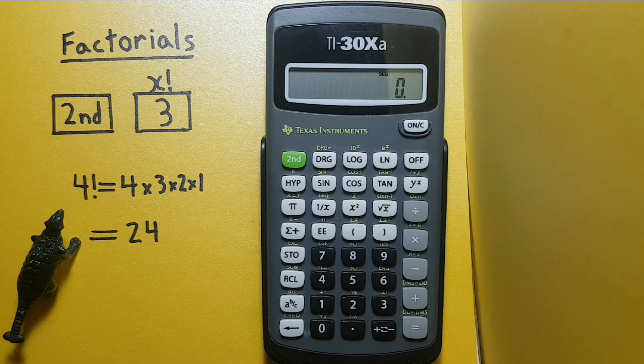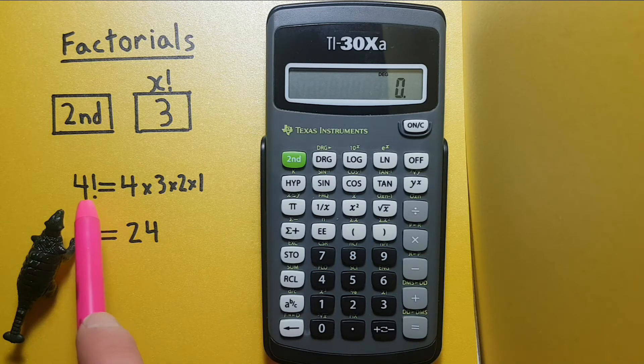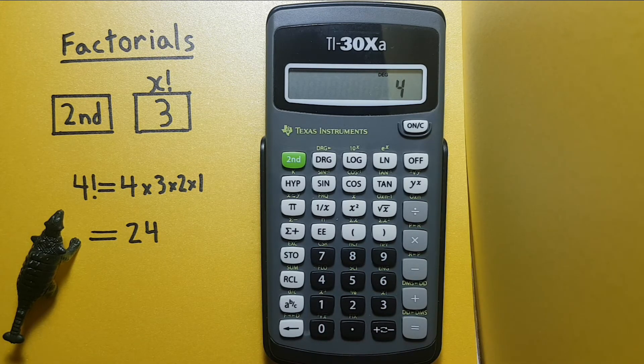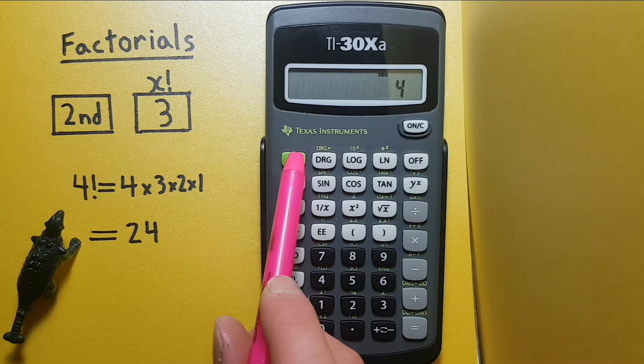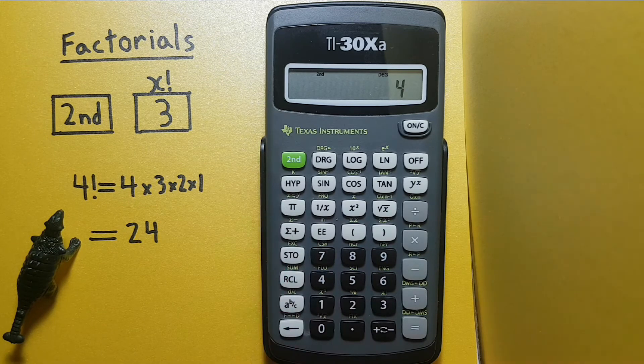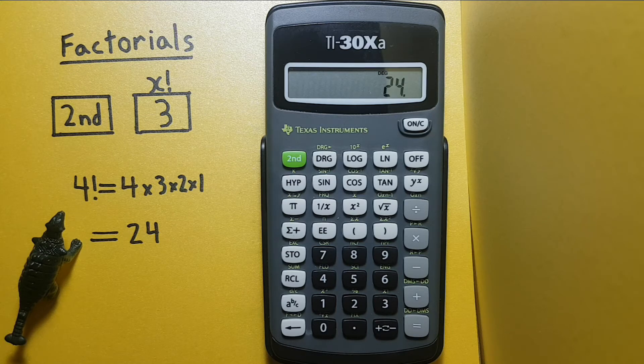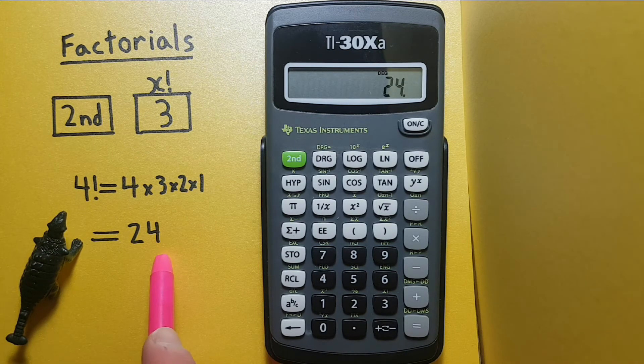So an example of this would be if we wanted to find four factorial we would put four on the screen then hit second function three and this would give us 24 which is four factorial.